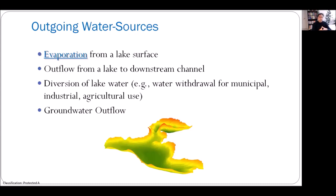Now let's look at the outgoing water sources. We have four types. The first is evaporation from the lake surface. The second is outflow from the lake to the downstream channel — lakes are often connected to channels downstream and upstream, and we need to know how much water is leaving through those channels. The third component is water diversion — a municipality, industry, or agricultural user can withdraw water from a lake, and we need to know how much is being diverted. The fourth is groundwater outflow — just like groundwater inflow, your lake can lose water through groundwater outflow.